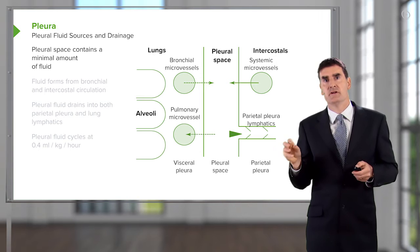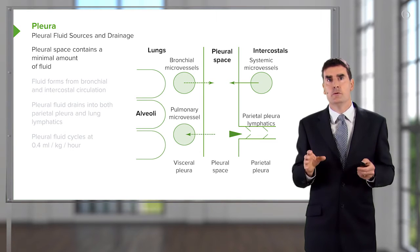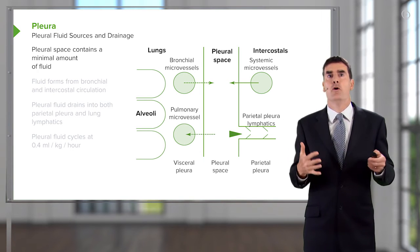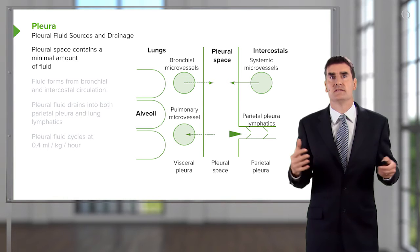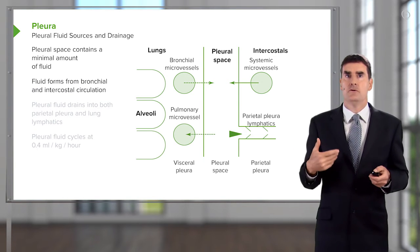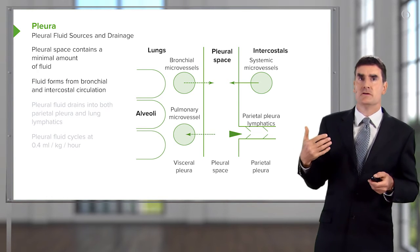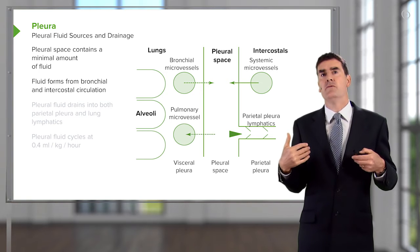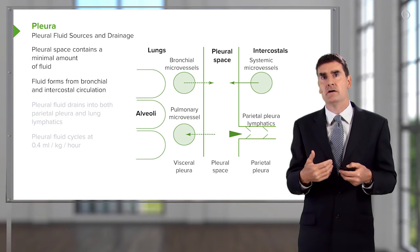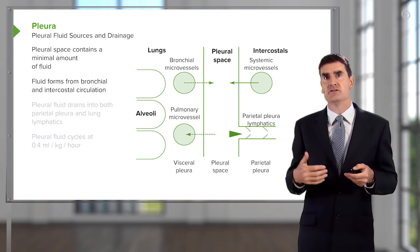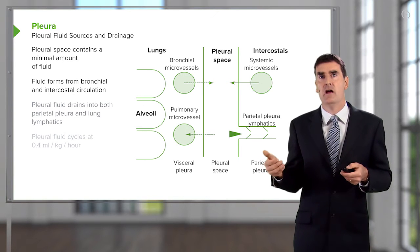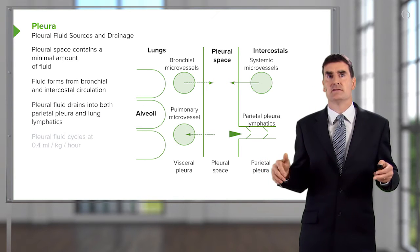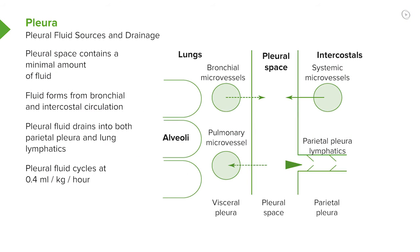There is a pleural space, but it contains in normal people a minimal amount of fluid — acting as a sort of oil so that when you breathe, things move nice and smoothly. The fluid forms from the bronchial and intercostal circulation, with fluid oozing out and then draining down the lymphatics. In general, fluid formation and drainage are in balance, so the pleural space does not expand.